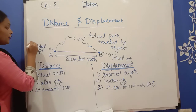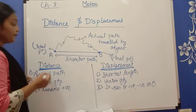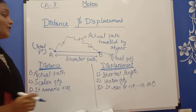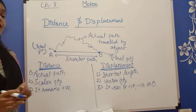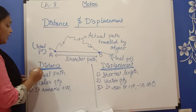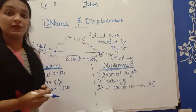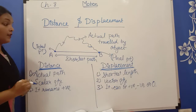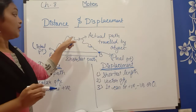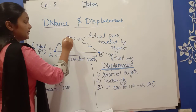Where we start, we call it the initial point, and where we finish, we call it the final point. So what is the shortest distance between the initial point and the final point? This is the shortest path. Now we call this distance — distance is the actual path followed by the object to travel, the actual path traveled by the object. This is our distance.